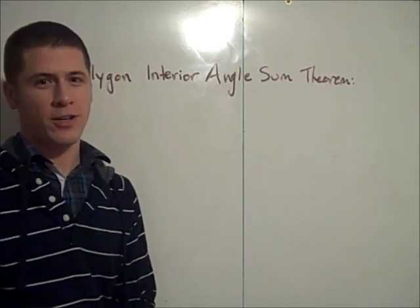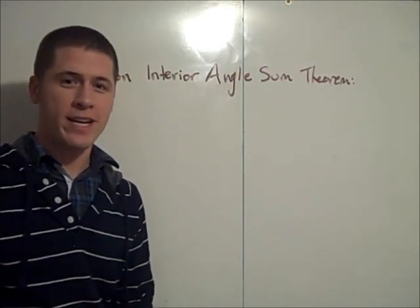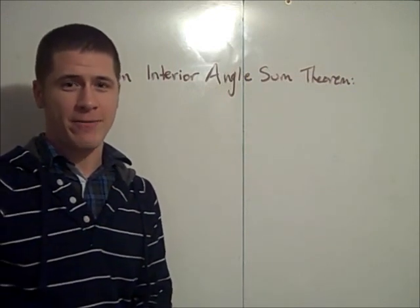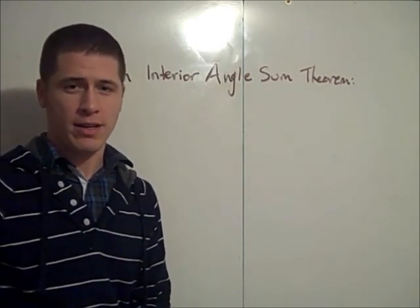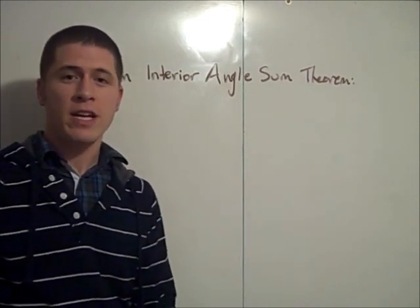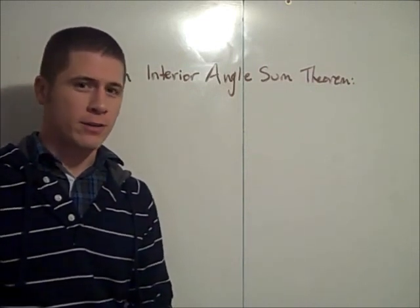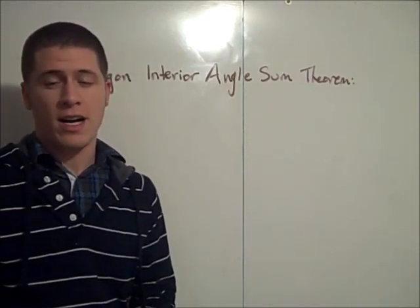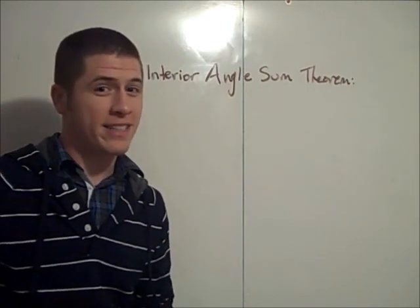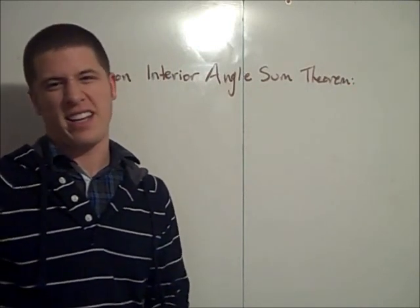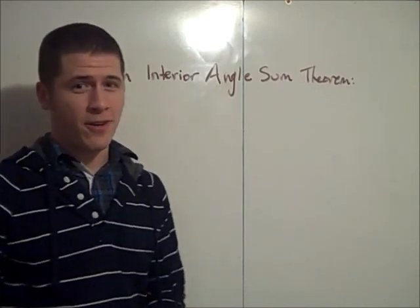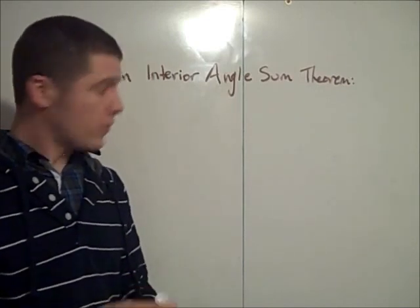The Polygon Interior Angle Sum Theorem gives us a way to find the sum of all the interior angles of any convex polygon, any convex n-gon. So it gives us a way to find the sum of the interior angles of any convex 100-gon, 17-gon, a decagon, a hexagon. So it's really a handy theorem, it's tons of fun, so here we go.